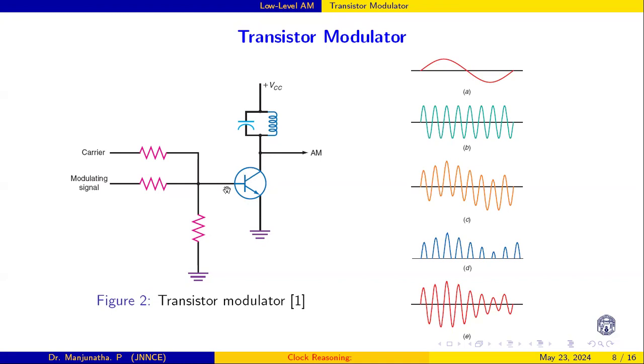It is a non-linear device, meaning there is a large change in the collector current. In this way, this transistor acts as an amplifier. This is the message signal and carrier. When these two are added at this point, this portion of the signal is connected to this base.